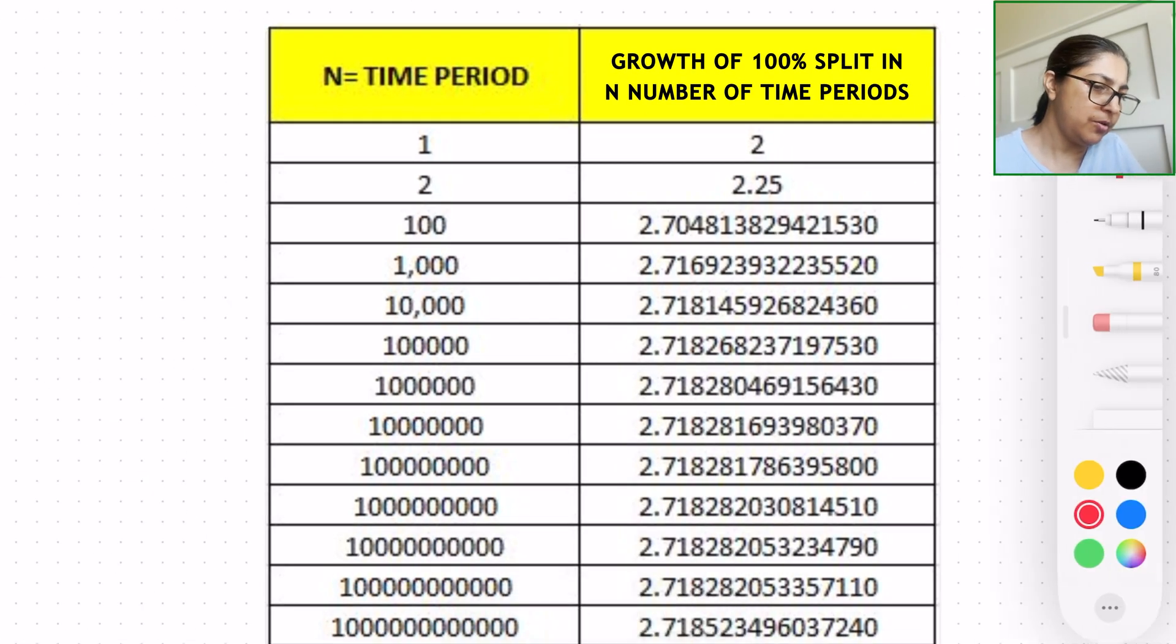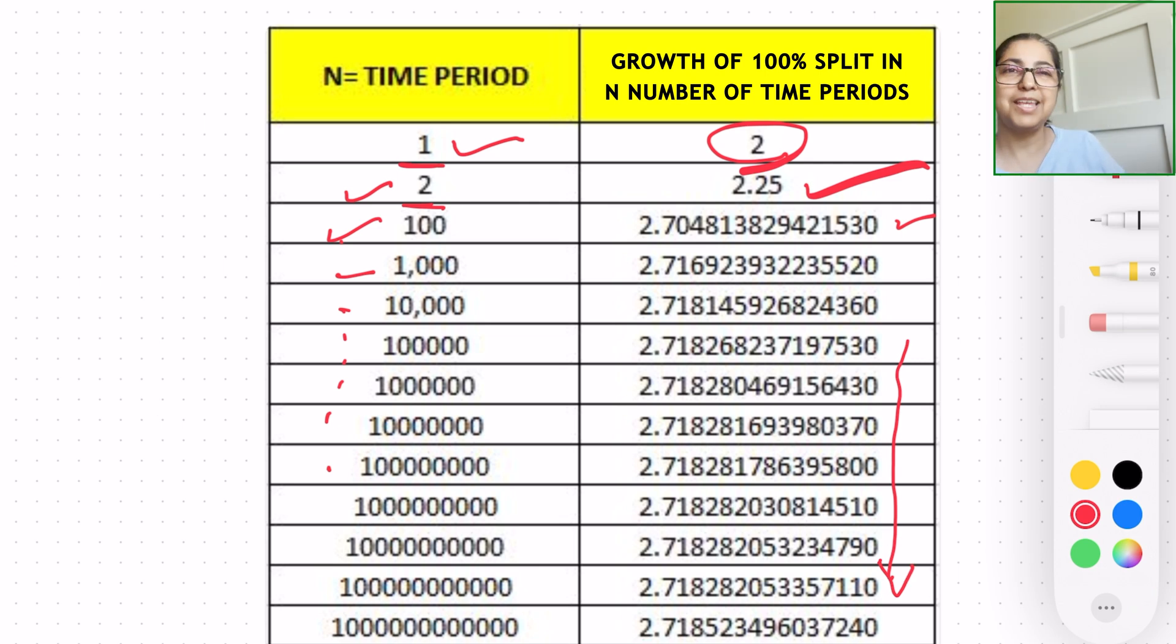This is how compound interest works. This 2.71, now we're getting close to our e-value. So let's go to this chart. As you can see, as we increase the number of time periods, for one time period you get two dollars, if you have two time periods you get 2.25, if your n value is 100 time periods you get 2.7048 and so on. And as you keep increasing the time periods, the value of your growth is more nearing the same decimal digits. This value right here, this generalization right here, is the e-value.